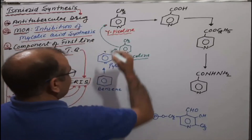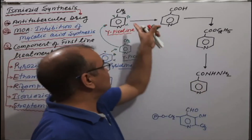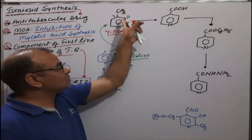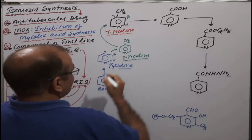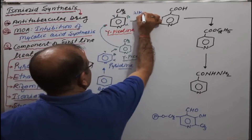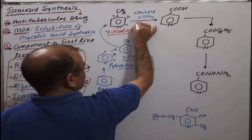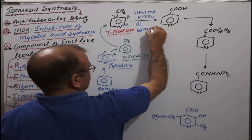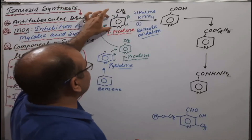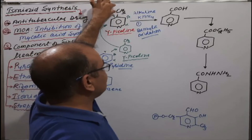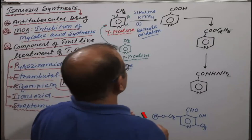Now in gamma-picoline, alkaline KMnO4 is used for oxidation. It undergoes the first reaction, which is benzylic oxidation. Benzylic oxidation means a carbon attached to the benzene ring or its analog undergoes oxidation — the methyl group converts into a carboxylic group. This compound is known as isonicotinic acid.